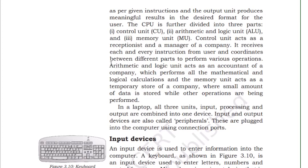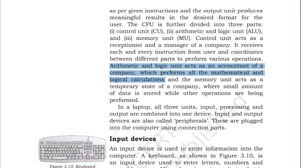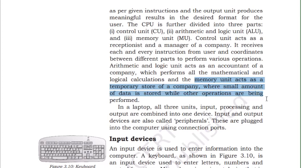The Arithmetic and Logical Unit (ALU) acts like the accountant of a company, performing all mathematical and logical calculations. Since the computer can only understand 0 and 1, all signals require calculation, which is handled by the ALU. The Memory Unit acts as the temporary store of the company where all data is stored.